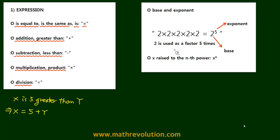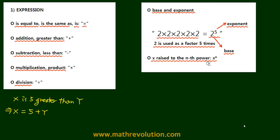We have what's called the base and exponents. This is the base and this is the exponent. 2 is multiplied 5 times, so 2 is used as a factor and 5 is the exponent. You can also say 'x raised to the nth power' — in this case, 2 is raised to the fifth power. If you have x to the power of n, this is x times x a total of n times. The base is x and the exponent is n.